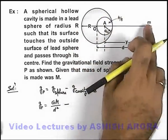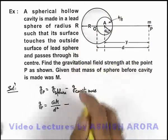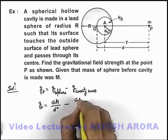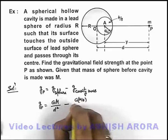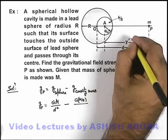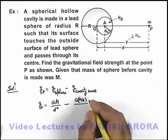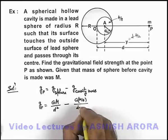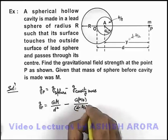At point P, the gravitational field due to this M by 8 mass can be written as G times M by 8, divided by distance squared. This distance we can write as d minus R by 2, whole squared.